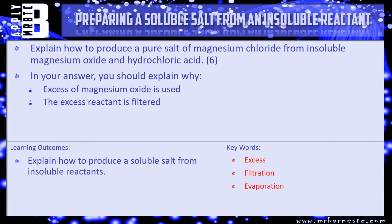Right, let's have a look at an exam question and see how much of that you've picked up. So this is a six marker, and it says explain how to produce a pure salt of magnesium chloride from insoluble magnesium oxide and hydrochloric acid. It also says in your answer you should explain why excess of magnesium oxide is used, and the excess reactant is filtered.